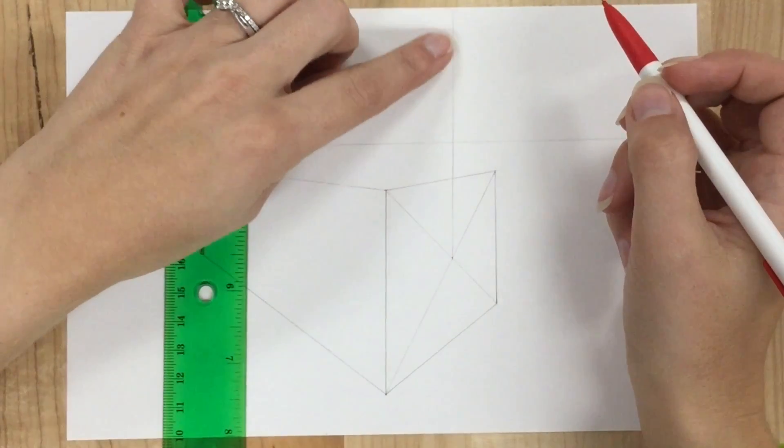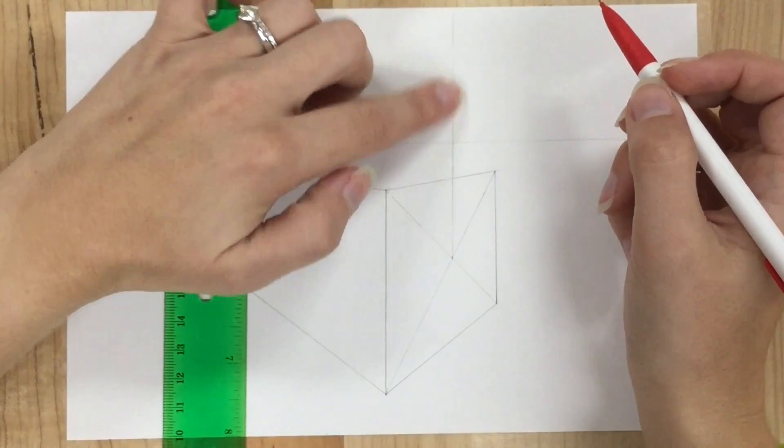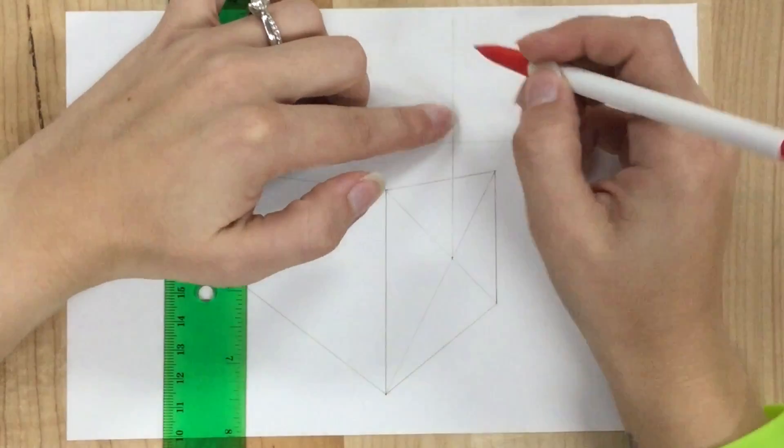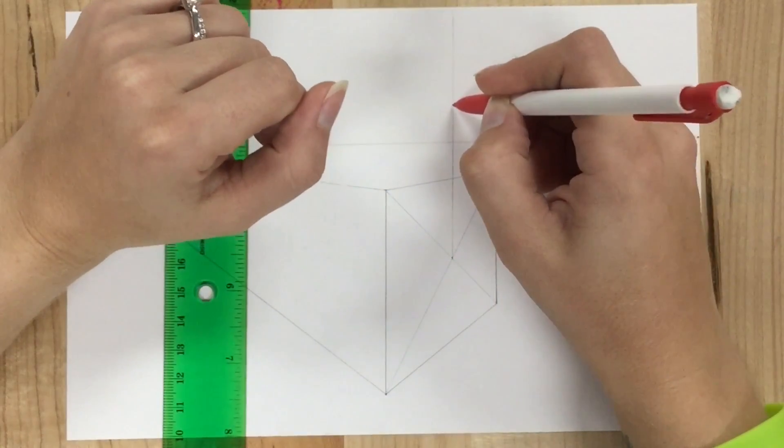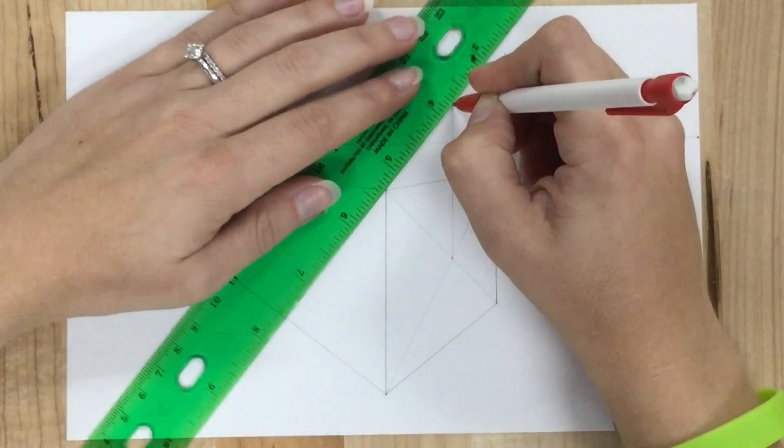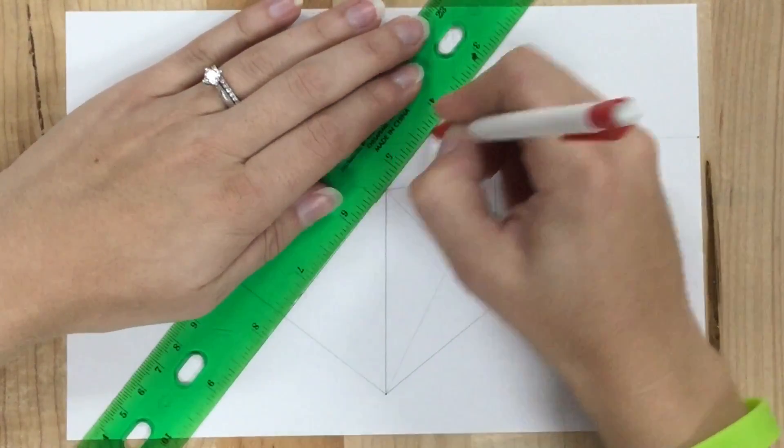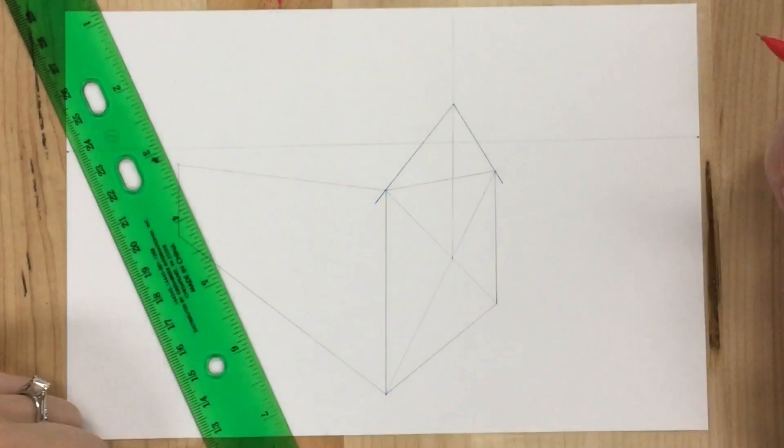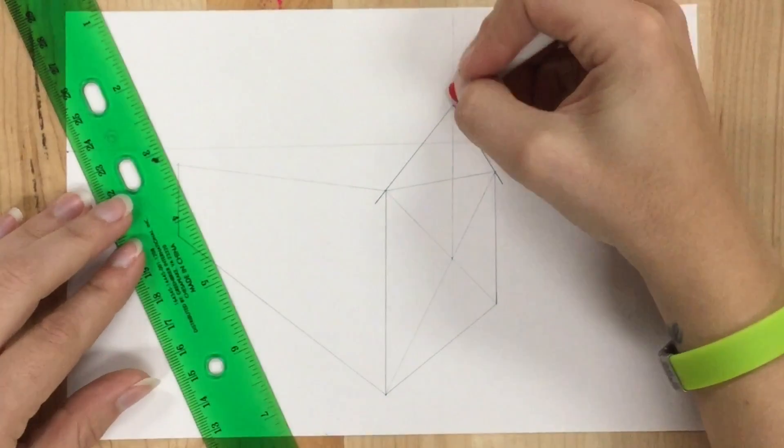Somewhere on this line is where the top of my roof needs to be. I can decide if it's really tall and pointy, short and less pointy. I need to pick that spot and then connect it down to the corners of that box. Now I can get rid of all this extra stuff.